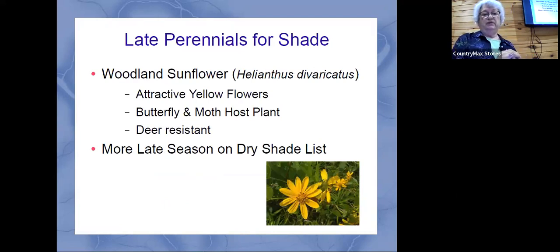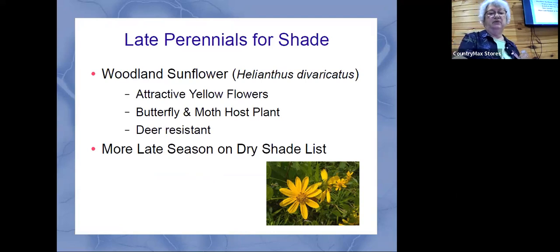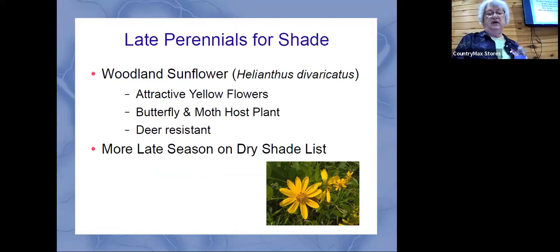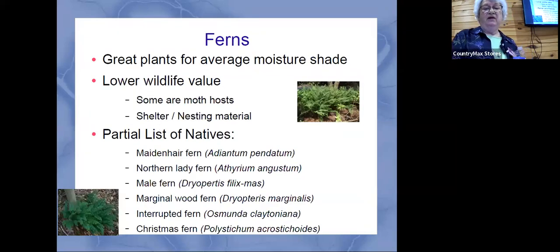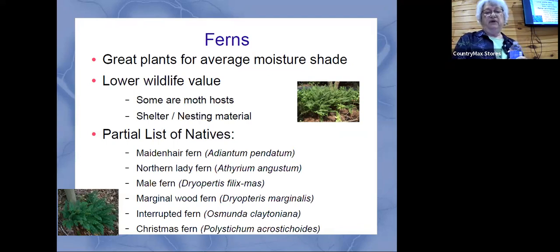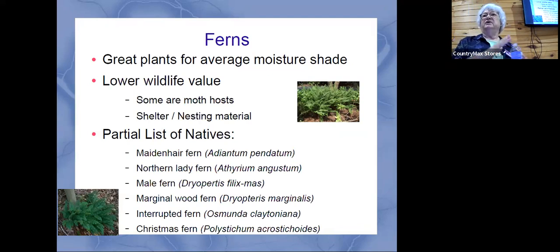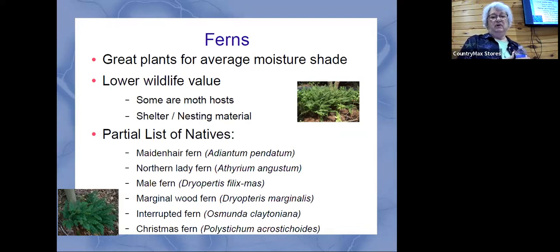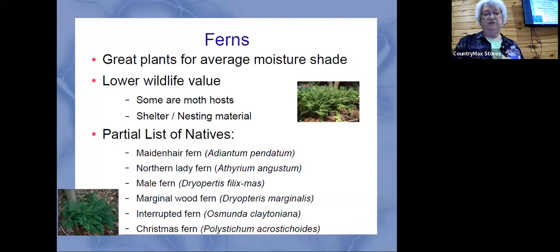Here are some other perennials for shade. The woodland sunflower blooms in the fall in the shade but is kind of a gangly plant. Another nice thing for interest — ferns don't have much animal value, but if you have a nice moist, humusy area in the shade, there are several different types of native ferns. You can create your own fern grotto, especially if you have a water feature. There are lots of different native ferns — the Northern maidenhair fern and the Southern maidenhair fern are totally different plants.